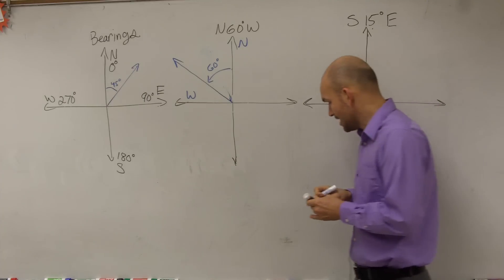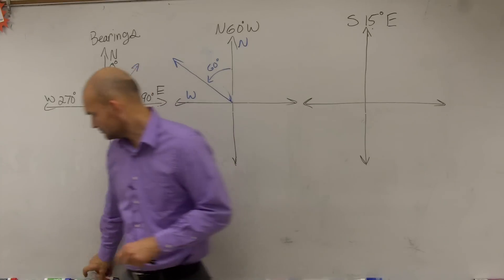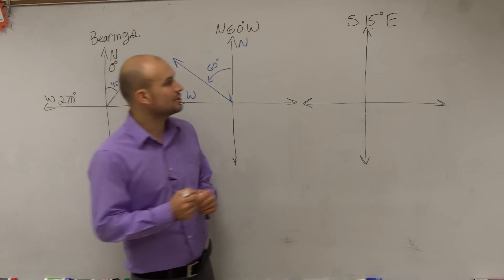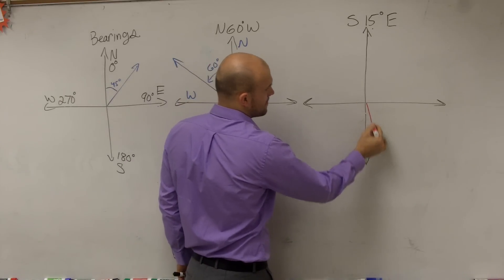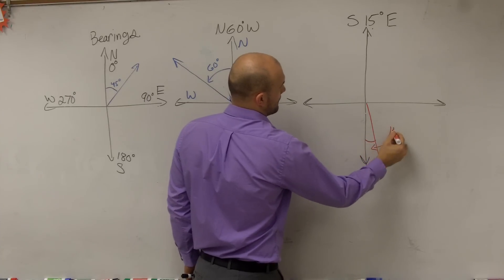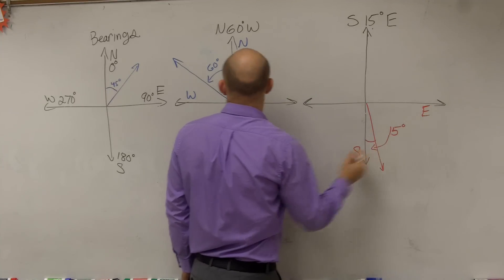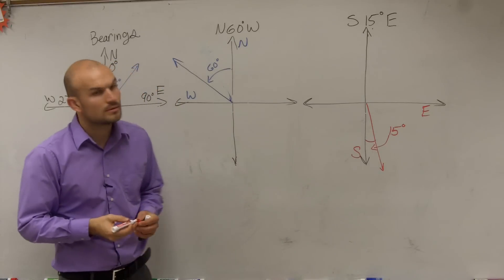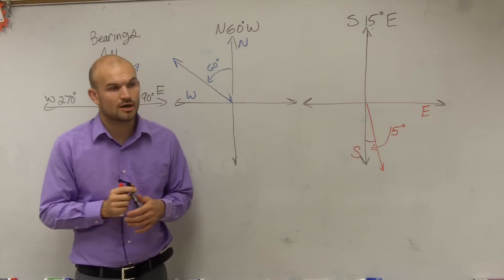Then the last one, if I say south, what you're going to do is go on the south axis. So you're going to go on the south axis, and then you go 15 degrees east. So ladies and gentlemen, that's how we're going to use bearings in our word problems.